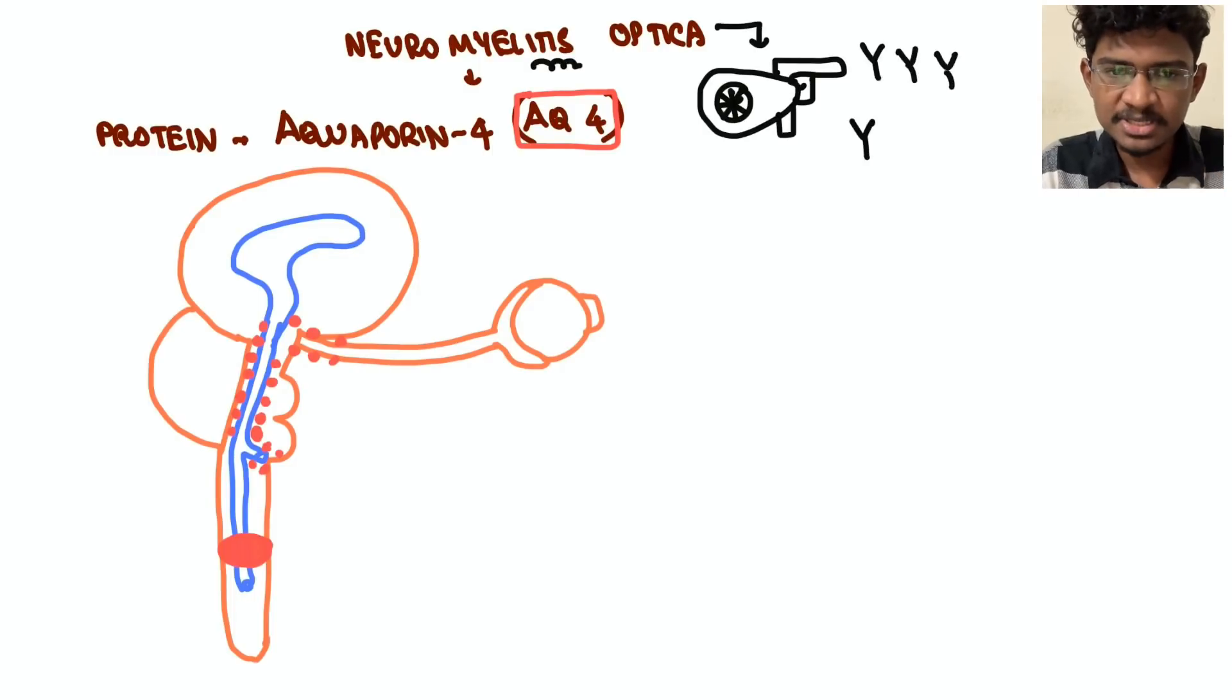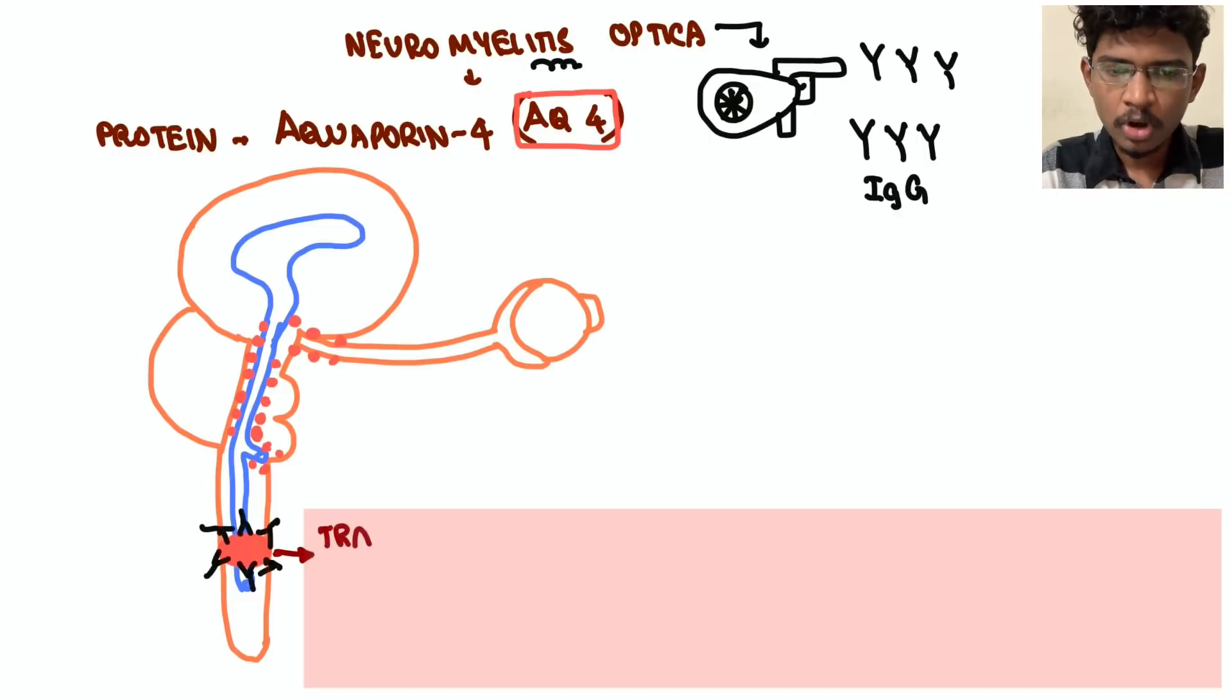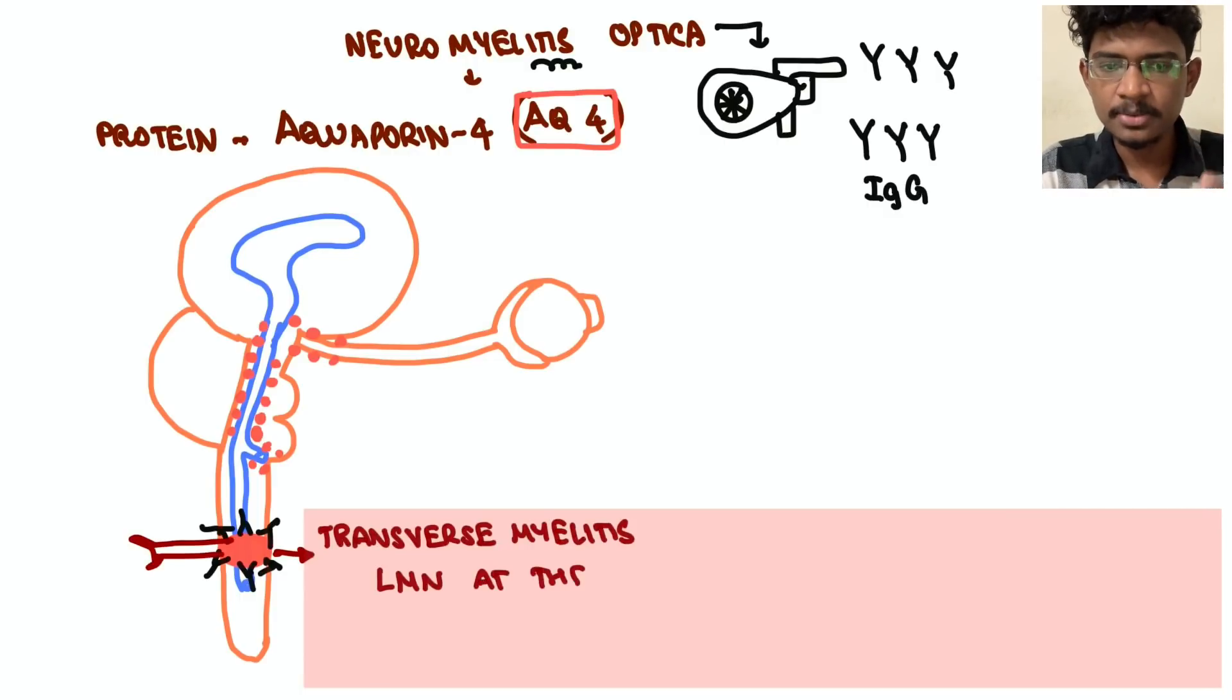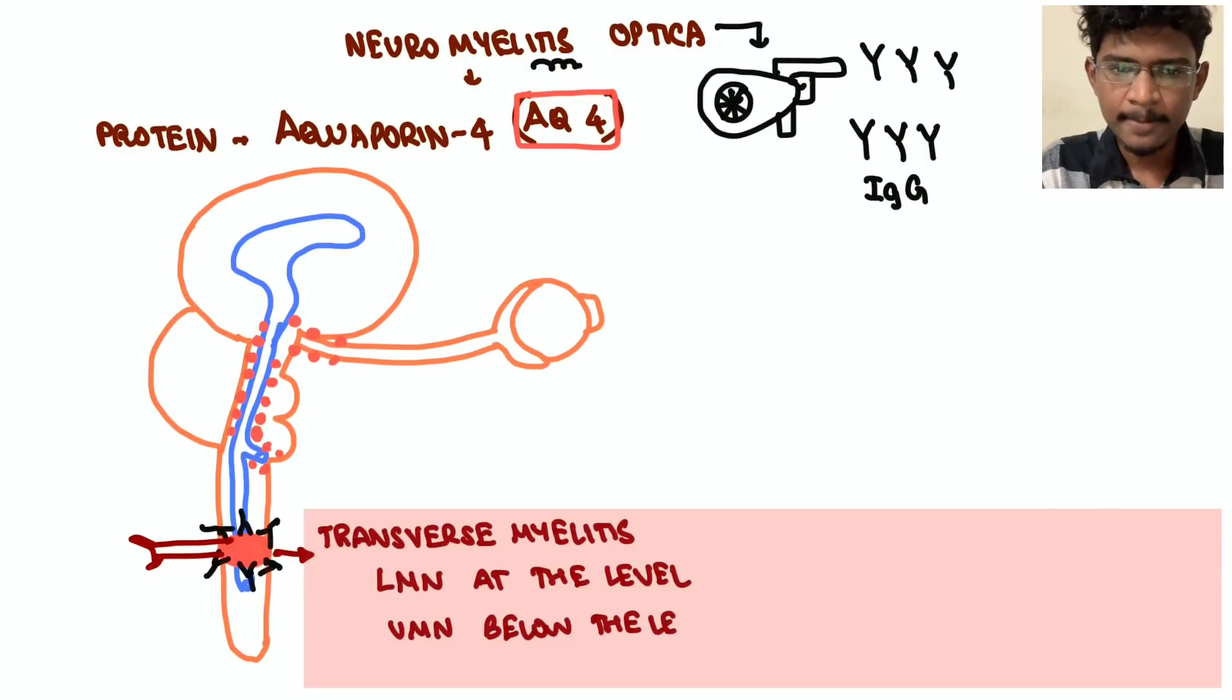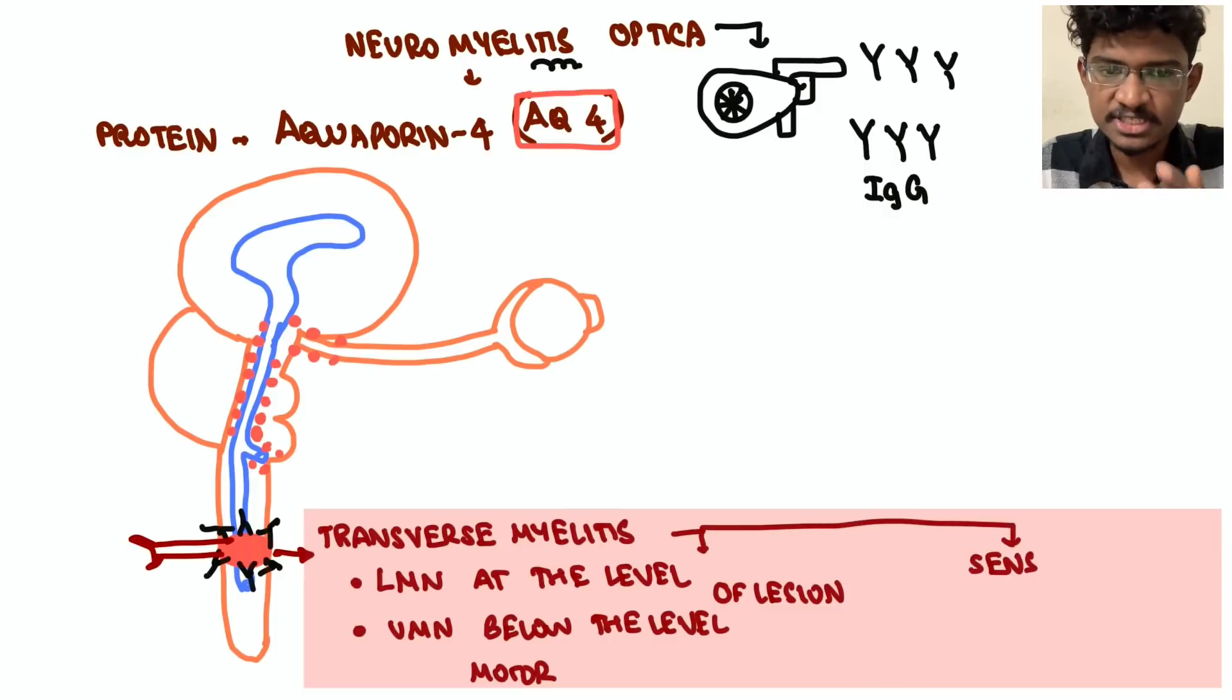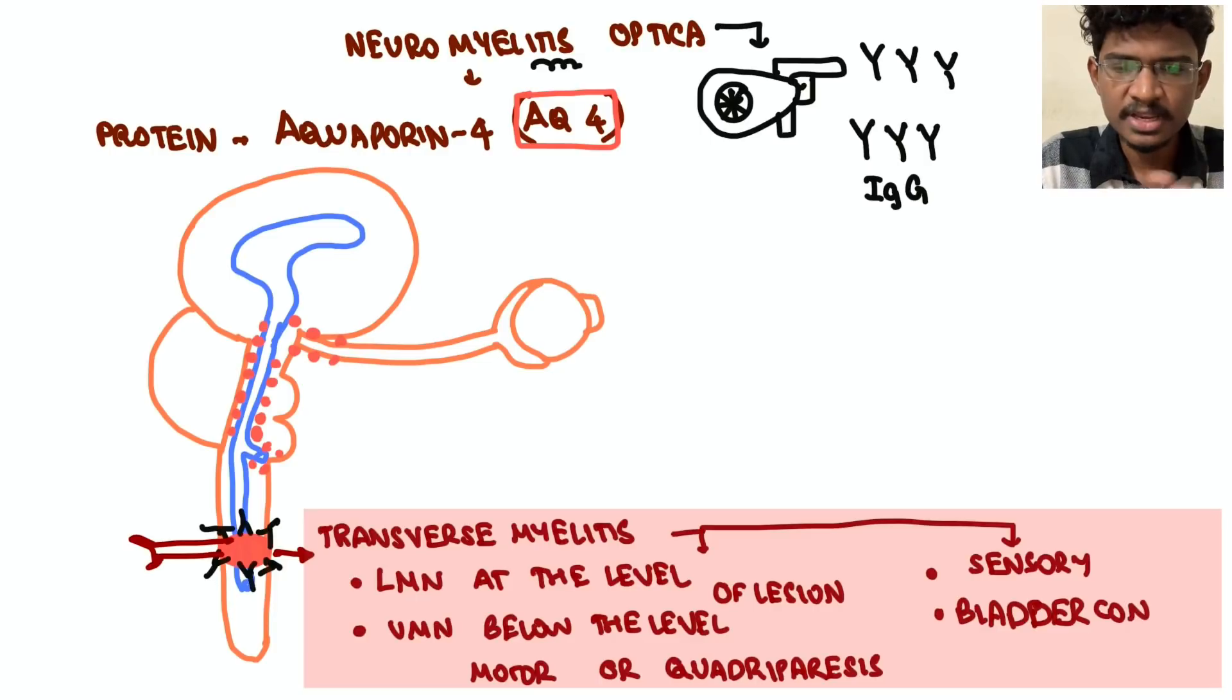So here in NMO, what happens is myelitis - auto-inflammatory attack happens. The plasma cells start to produce lots of antibodies against this aquaporin-4. So automatically the spinal cord will be affected. If cervical spinal cord is affected, patient will be having quadriparesis. If it is lumbar, then the patient will be having paraparesis associated with sensory symptoms, bladder control problems - entire section of spinal cord is affected.